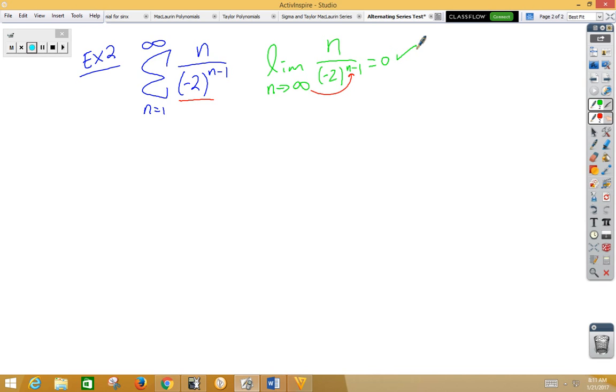Our second part is to show that it's decreasing. I'm going to use the ratio test to prove that it decreases. So I'm going to take the next term, which would be n plus 1, over negative 2 to the n minus 1 plus 1, and then multiply by the reciprocal, which is negative 2 to the n minus 1 over n.